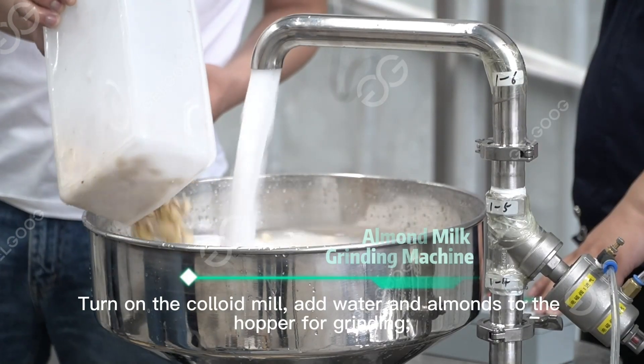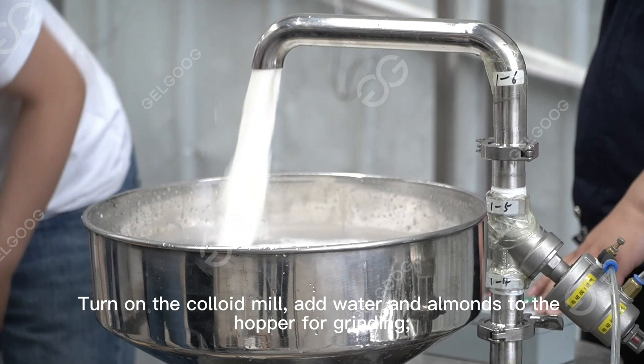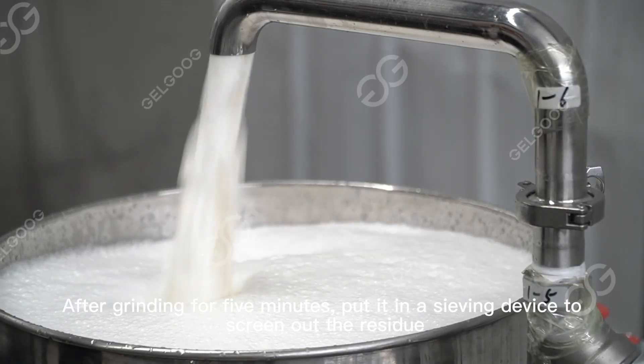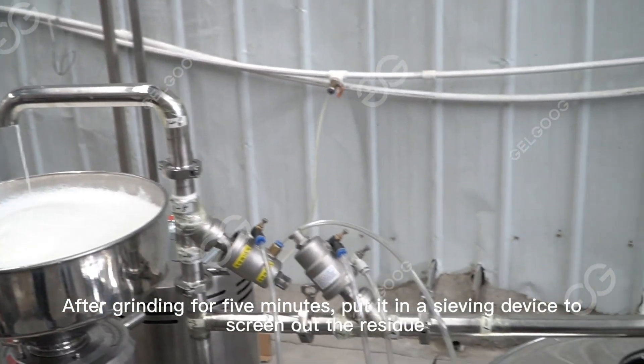Turn on the colloid mill, add water and almonds to the hopper for grinding. After grinding for 5 minutes, put it in a sieving device to screen out the residue.